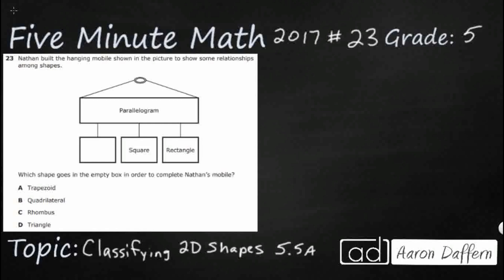We have a hanging mobile and it shows relationships here. You notice we've got our parallelogram up top. Underneath it, we've got a blank shape where something is supposed to go in this empty box. We've got a square and a rectangle.